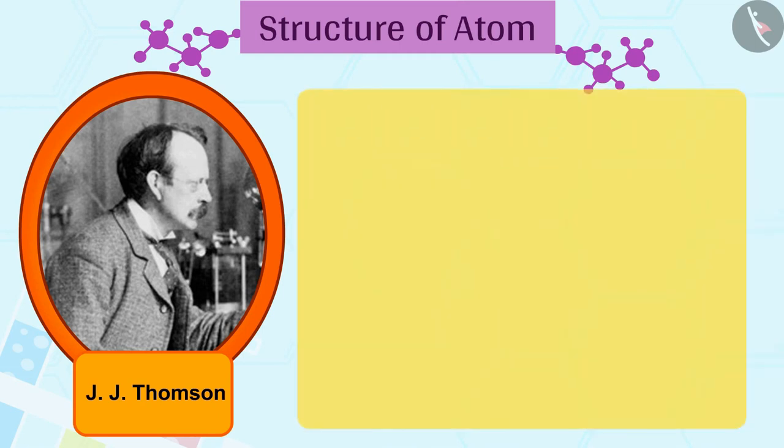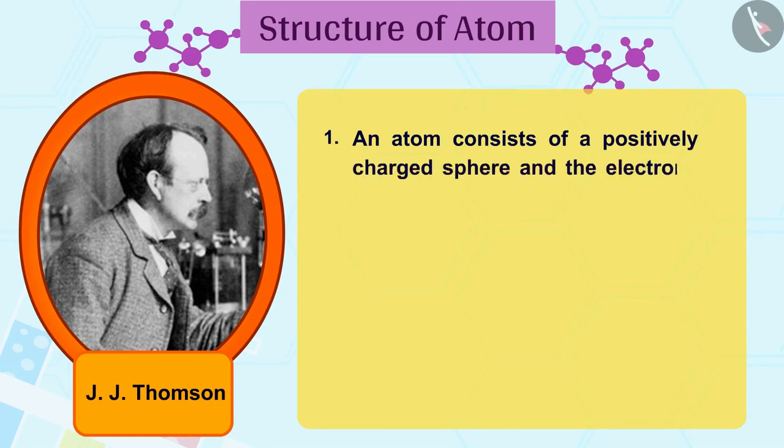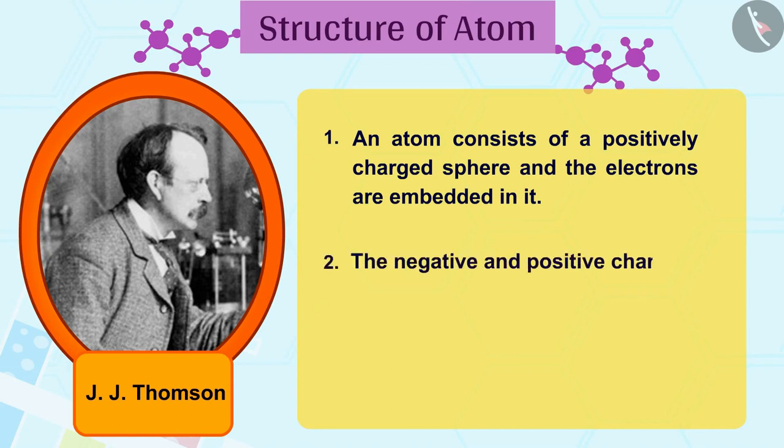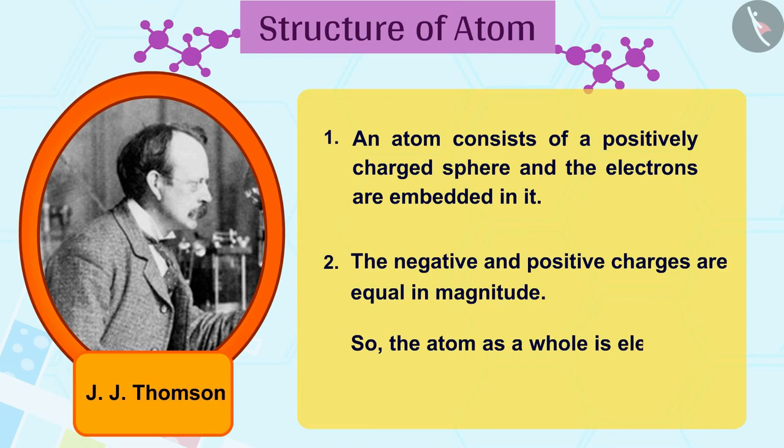Thomson proposed that: 1. An atom consists of a positively charged sphere and the electrons are embedded in it. 2. The negative and positive charges are equal in magnitude so the atom as a whole is electrically neutral.